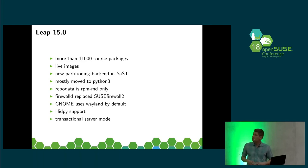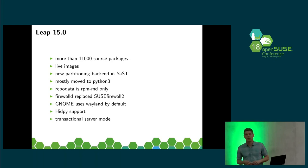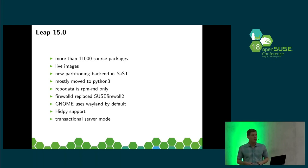Leap 15 does support high DPI setups. High DPI means screens that have a higher resolution than full HD, for example 4K displays. KDE and GNOME support it. Even YaST supports it, but it doesn't work fully out of the box. Please check the release notes — if you have such a display and can't read anything, you have to turn a few knobs and then it works.